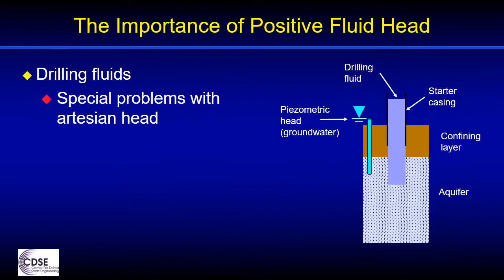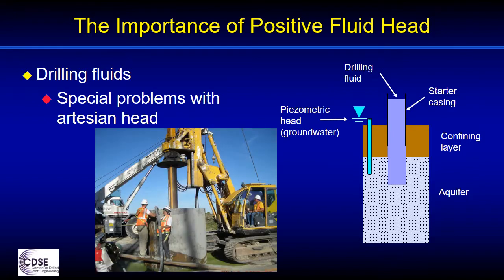When groundwater is very shallow, it may be necessary to elevate casings above the ground surface to maintain positive head. Artesian groundwater — that is, levels above the ground surface — can pose special problems to construction because of the need for elevation to achieve a positive head pressure. You can see from this photo that elevated casing complicates the construction. Imagine if the casing had to be elevated by 10 feet or more, as is sometimes necessary.